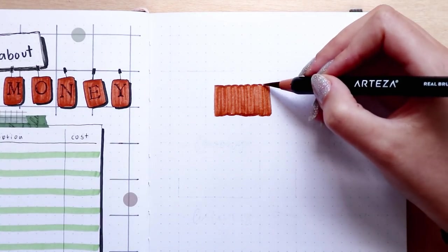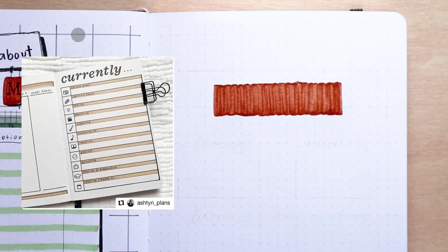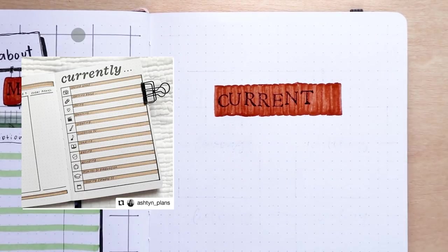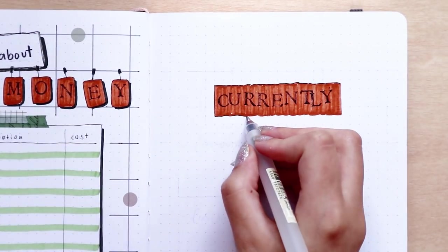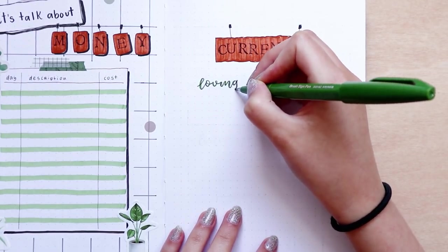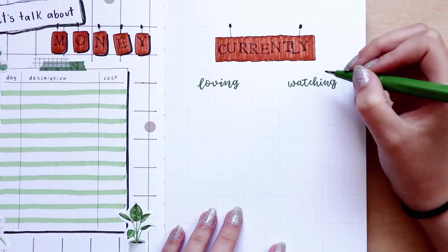My next page is a brand new page that I never did before in my bullet journal. I saw this page on Ashtyn Plenn's Instagram, and I was really curious to try it out in my bullet journal. I named this page 'currently' because that was the title that she named hers in her bullet journal, and this page is mainly for me to track everything that I'm loving, watching, listening, reading, and that I'm excited about throughout the month.